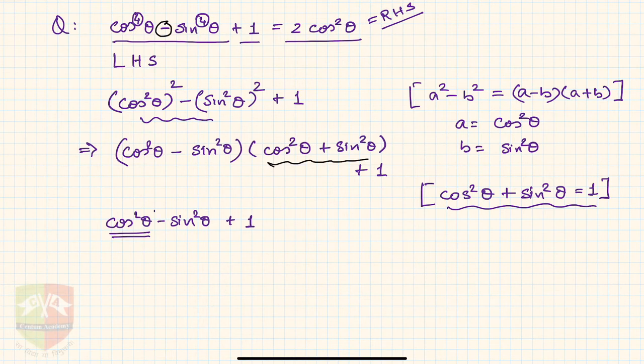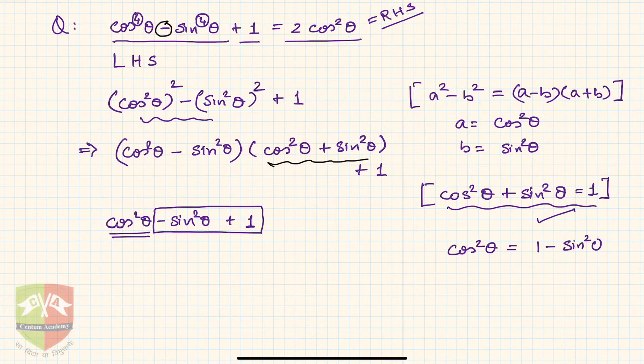And if you notice carefully this is another cos²θ from this identity. Why? Because cos²θ can be represented as 1 - sin²θ.